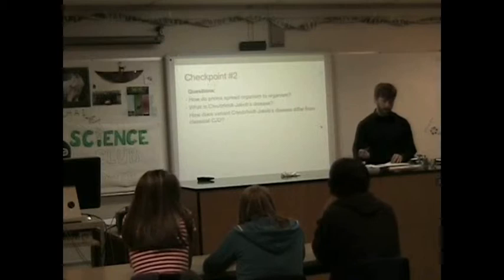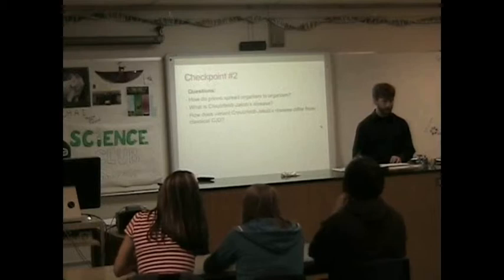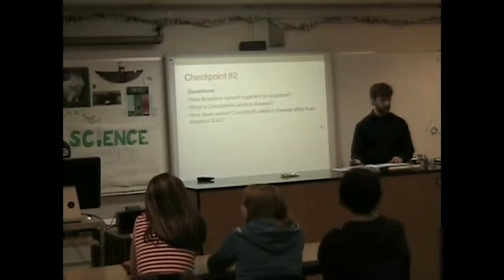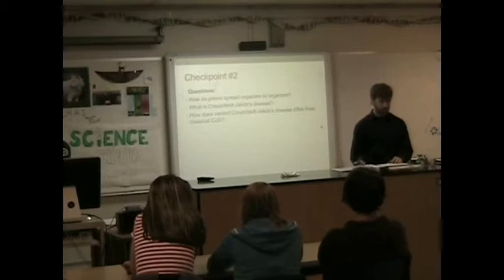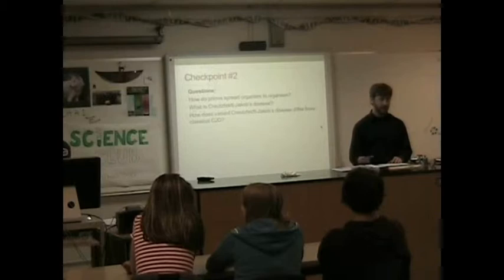Basically, with classic CJD, you see what look like early neurologic signs of dementia or Alzheimer's, but they're a lot younger than people would typically be getting Alzheimer's. Whereas with variant CJD, typically you see prominent psychiatric and behavioral symptoms, and it's more delayed in neurological signs.